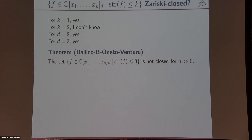I work in algebraic geometry. For matrix rank it is very nice: a limit of matrices of rank at most k again has rank at most k. So the first question is: does the same hold for strength? Is the set of elements of strength at most k Zariski closed? Starting with easy cases — degree two and degree three — the answer is yes for both.